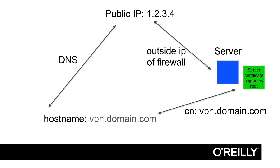So your outside IP address, which should be static and not given from DHCP, because it should not ever change — your public IP address must be configured on the outside interface of the firewall. And that IP address should be pointed to from some kind of domain name or hostname in DNS. The client should connect to that hostname always, never to the IP address. If the client connects to the IP address, we will get a certificate warning.